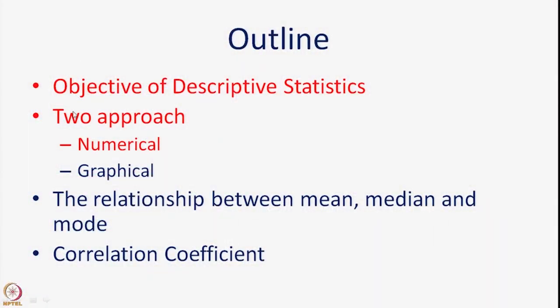Hello and welcome to the course on Dealing with Materials Data. In the previous session, we were going through the subject of descriptive statistics — how to describe your data in terms of either numerical values or graphical values. We covered the numerical aspects out of the two approaches. We first looked at the objective of descriptive statistics, then the two approaches: numerical and graphical. In the last session we covered numerical methods, including the measure of central tendency and the measure of dispersion.